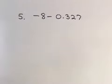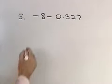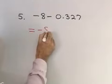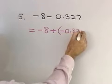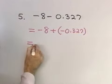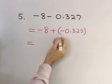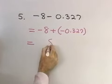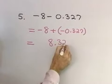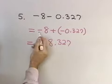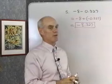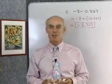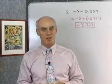Negative 8 minus 0.327. This is going to be negative 8 plus negative 0.327. So, now I'm going to add two numbers with the same sign. So, I add absolute values, and I get 8.327. And I use the common sign, which is negative. So, the answer to that is negative 8.327. And that's a look at addition and subtraction with decimal numbers.